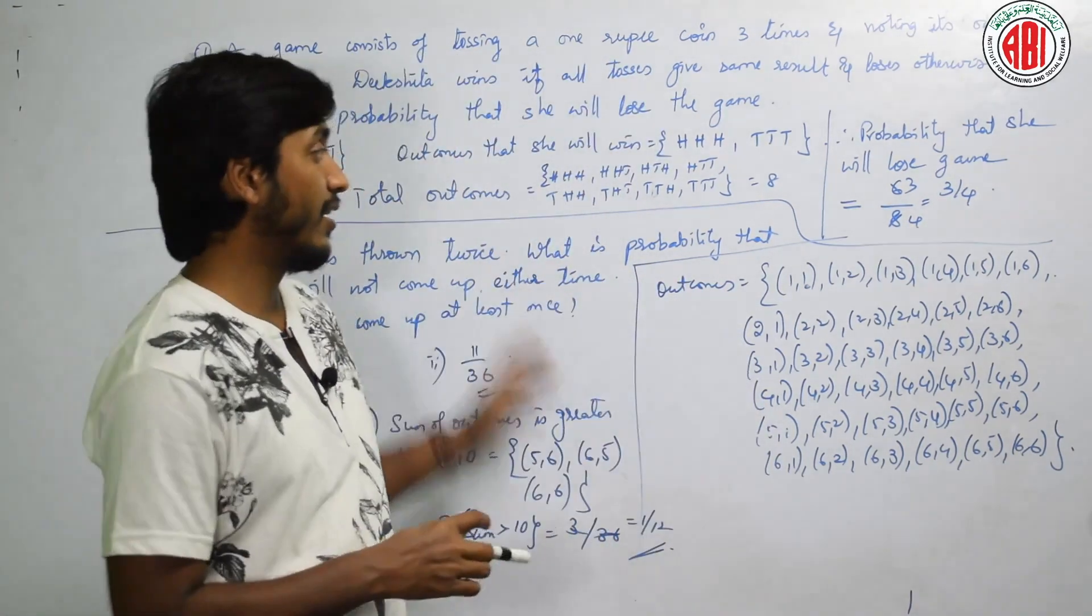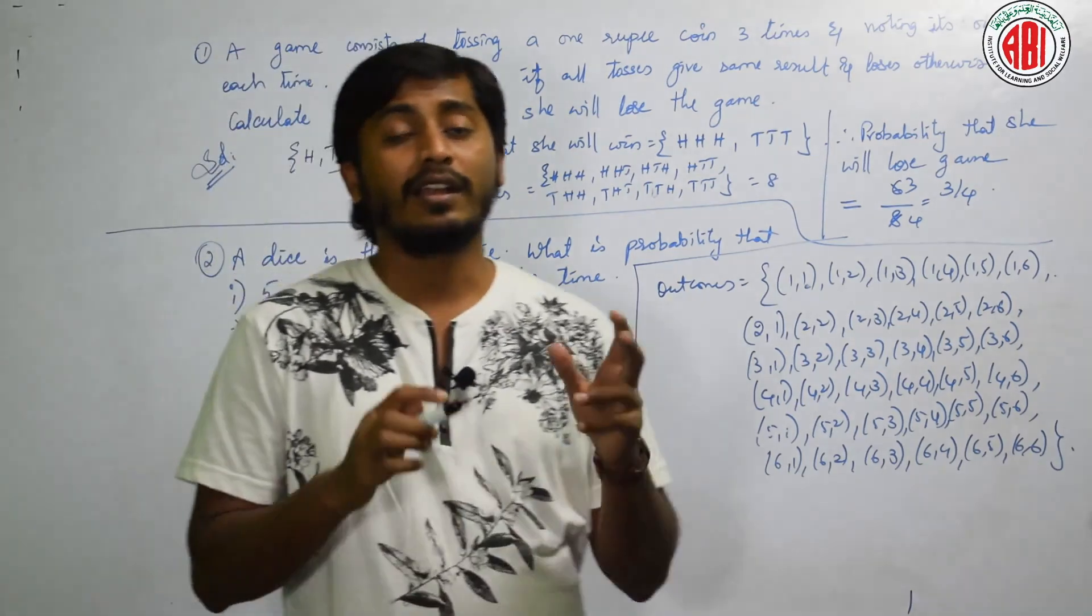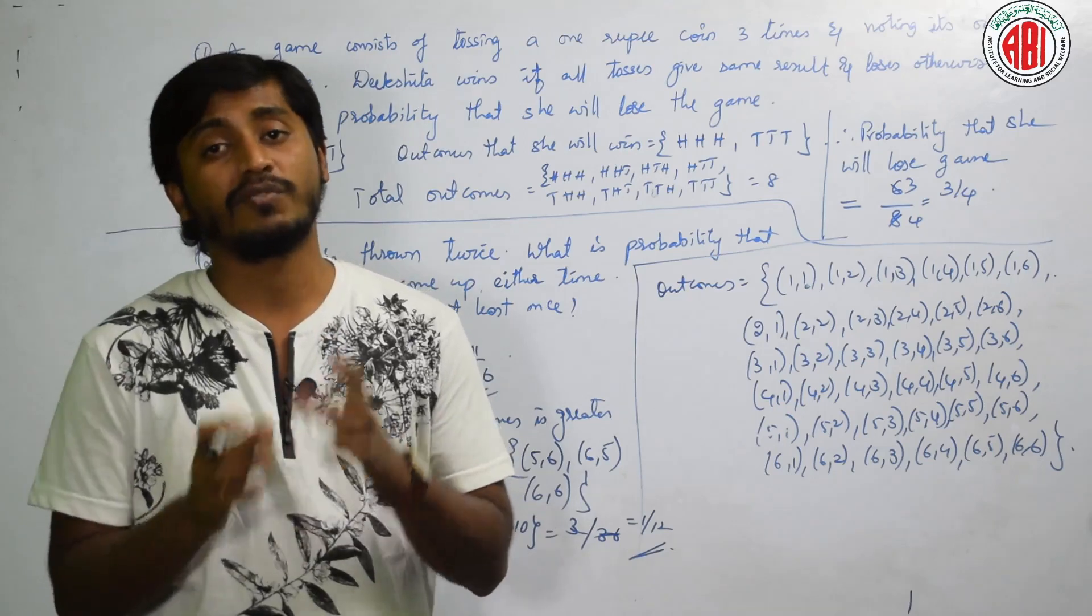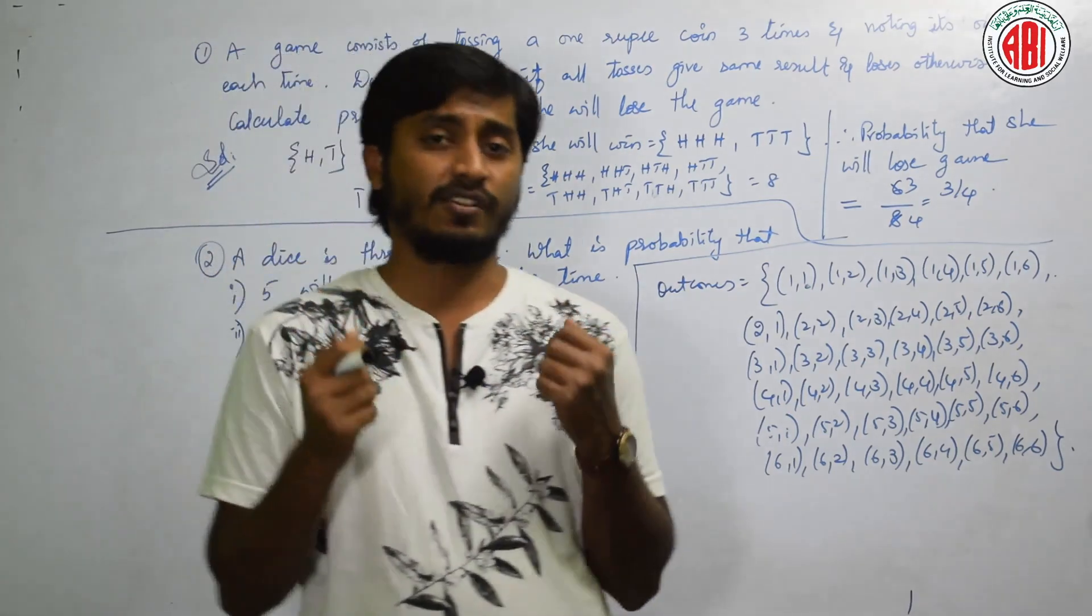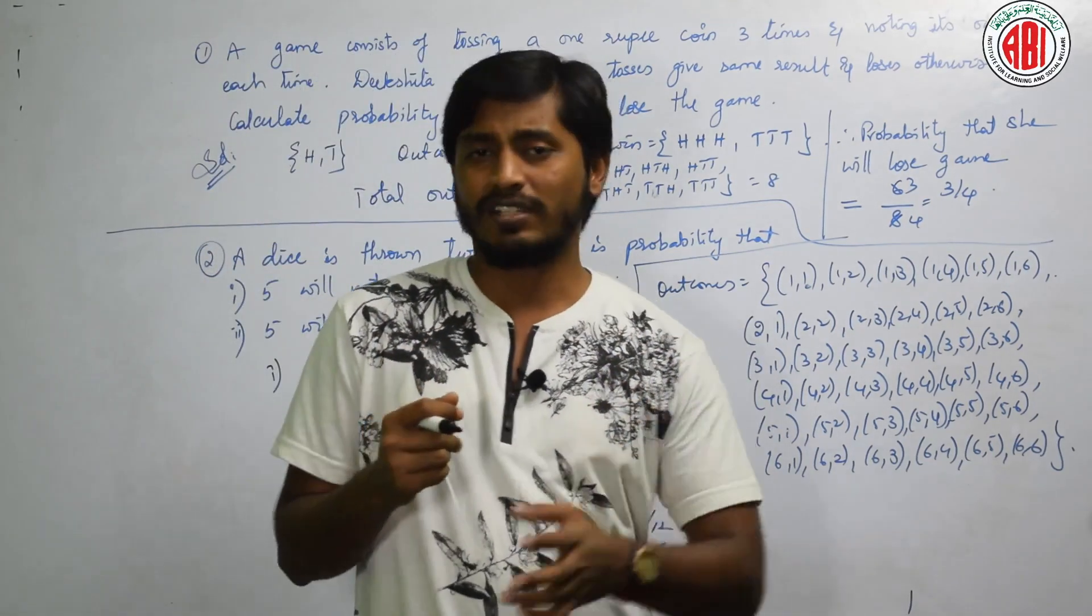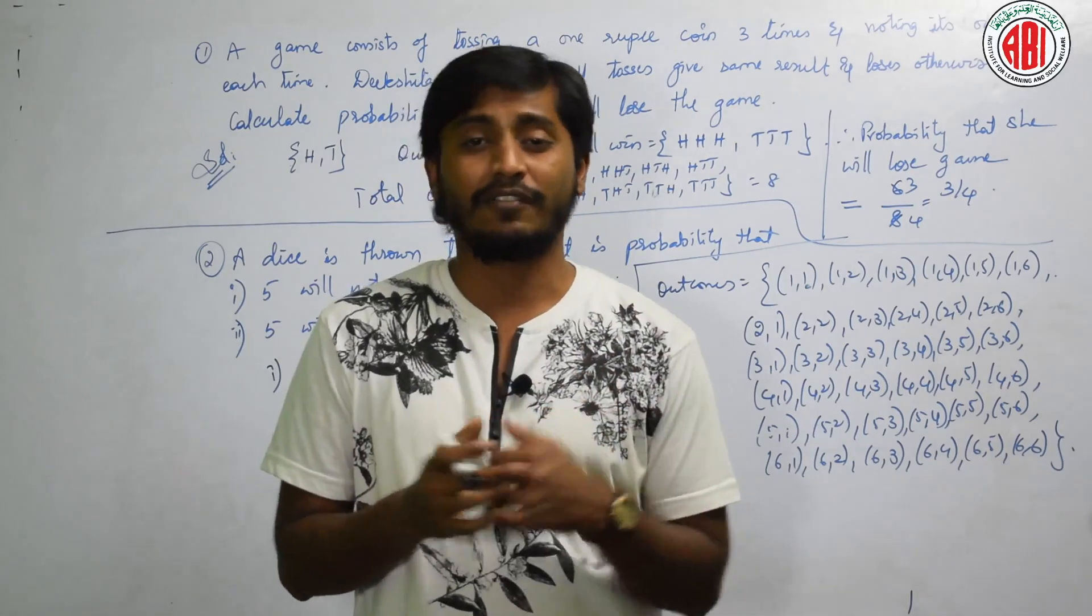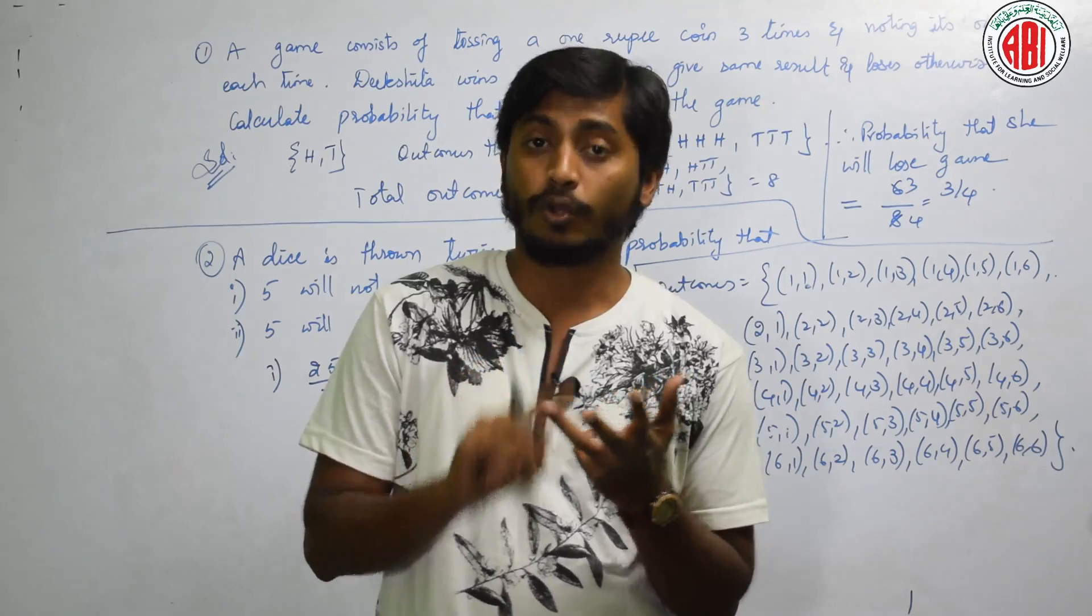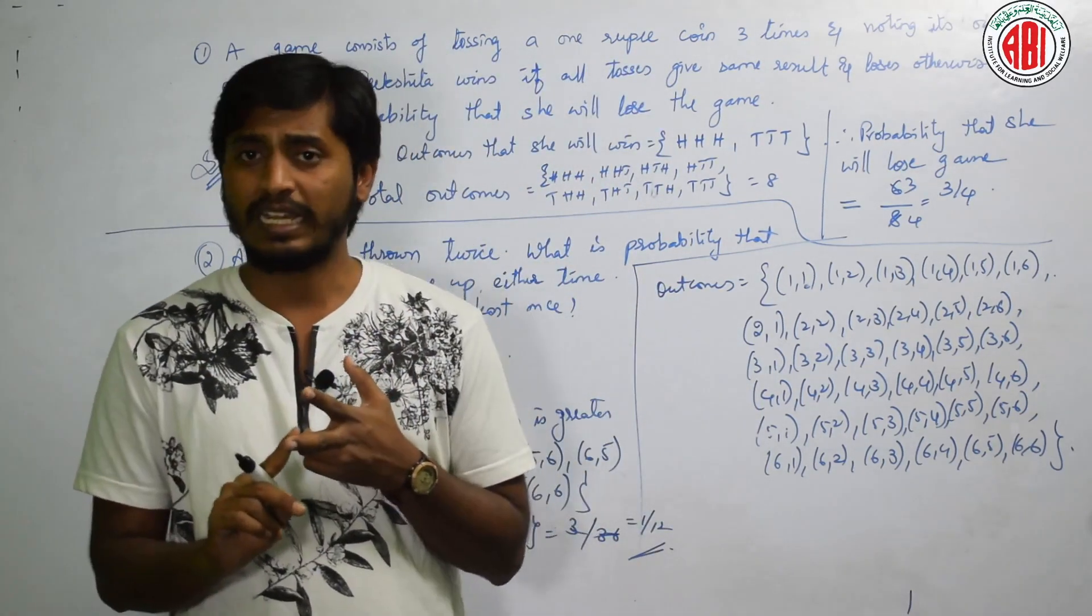By this question, we have ended the chapter probability. What did we learn in this chapter? We have started with the basic definition. That is, what is probability? What is the mathematical expression of probability? What is an event? What is an experiment? The basic definitions, right? After that, we learned about tossing a coin, throwing a dice and deck of cards. Clear? Fine.